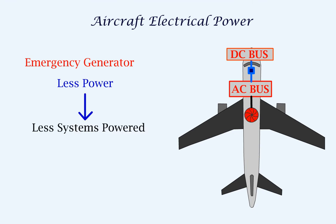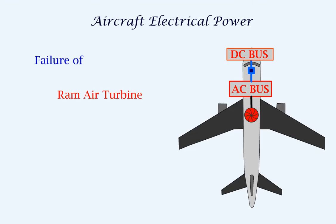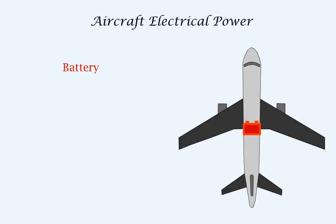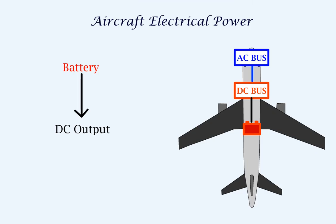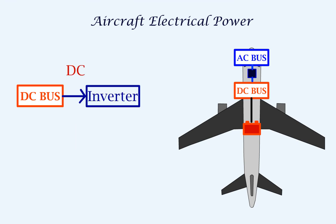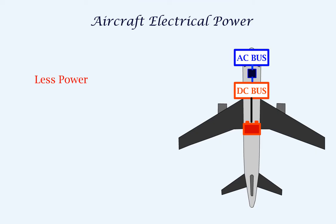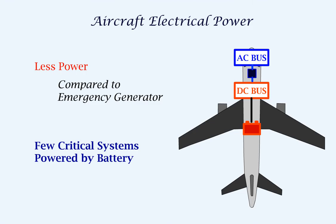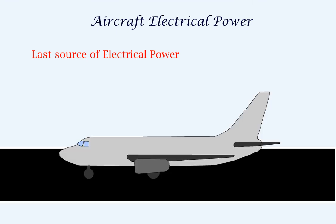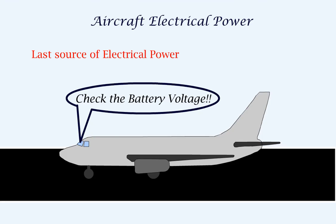The power obtained from this generator is much less compared to the engine or the APU generators. Hence, it can supply power to fewer systems when compared to engine or APU generators. In case of failure of the ram air turbine or the emergency generator, the power has to be taken from the aircraft's batteries. The battery can provide only DC power, so the battery is connected to the DC bus and then connected to the AC bus via an inverter. The function of the inverter is to convert the direct current or DC to alternating current or AC. The power obtained from the battery would be even lesser than that of the emergency generator, so only a few very important systems are powered by the battery. The battery is the last source of electrical power, so checking the battery voltage is an extremely important step when the aircraft is on the ground.